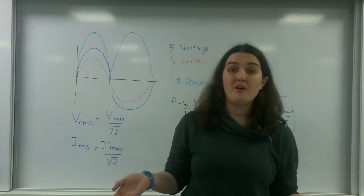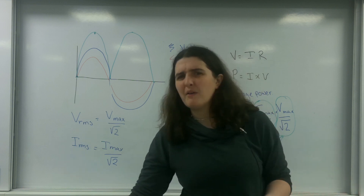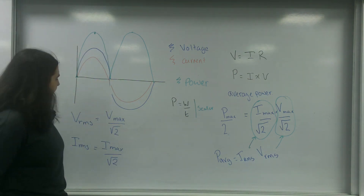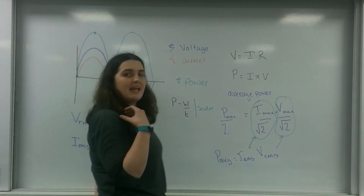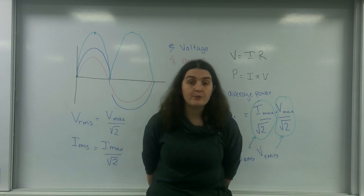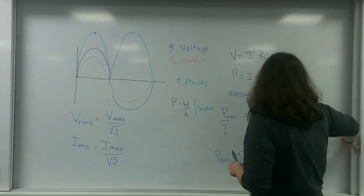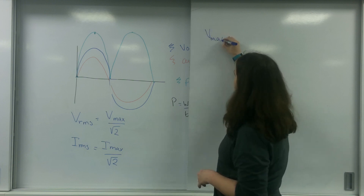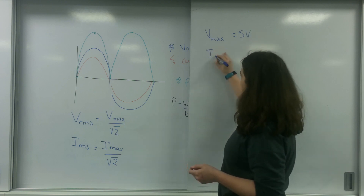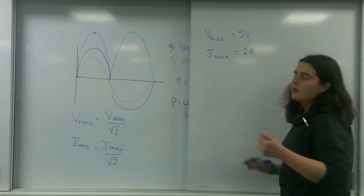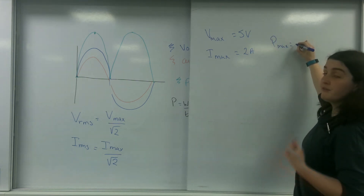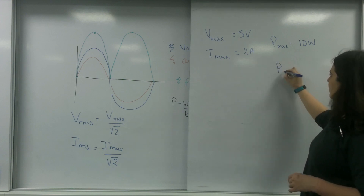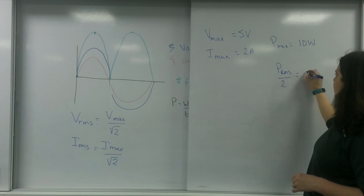It's all the idea that voltage and current are intrinsically related to each other. So if you change one — if you half one — you have to half the other. And because they're multiplied together, that wouldn't give you half the power; that would only give you a quarter. So let's give an example: if my maximum voltage was 5 volts and my maximum current is 2 amps, my maximum power is 5 times 2, which is 10 watts. If I wanted my average power, I divide that by 2, giving 5 watts.